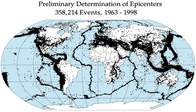There are three main types of fault, all of which may cause an interplate earthquake: normal, reverse and strike-slip. Normal and reverse faulting are examples of dip-slip, where the displacement along the fault is in the direction of dip and movement on them involves a vertical component. Normal faults occur mainly in areas where the crust is being extended such as a divergent boundary. Reverse faults occur in areas where the crust is being shortened such as at a convergent boundary. Strike-slip faults are steep structures where the two sides of the fault slip horizontally past each other. Transform boundaries are a particular type of strike-slip fault. Many earthquakes are caused by movement on faults that have components of both dip-slip and strike-slip; this is known as oblique slip.